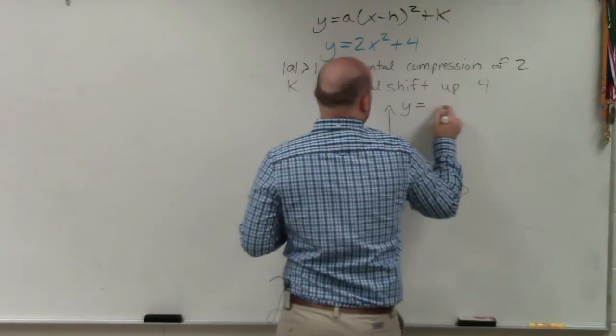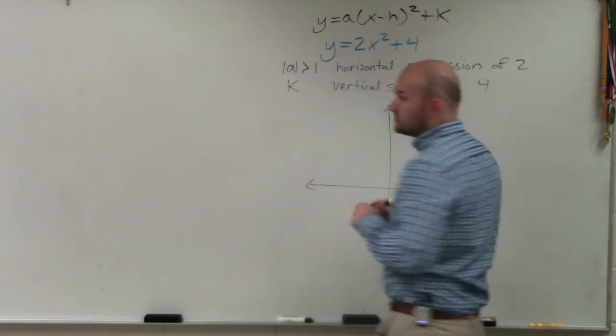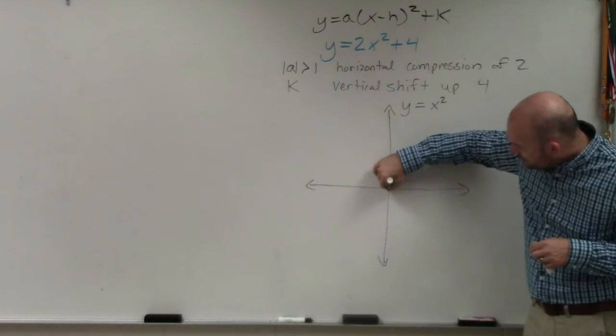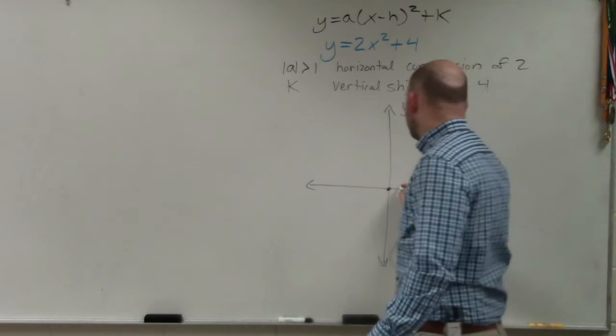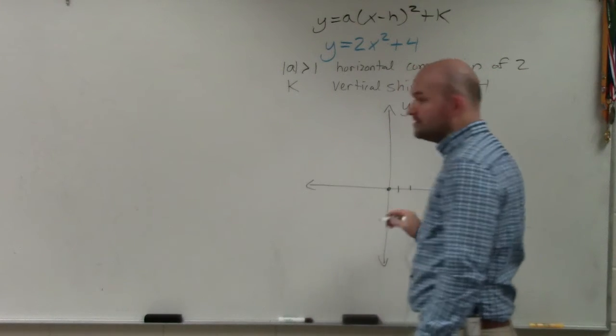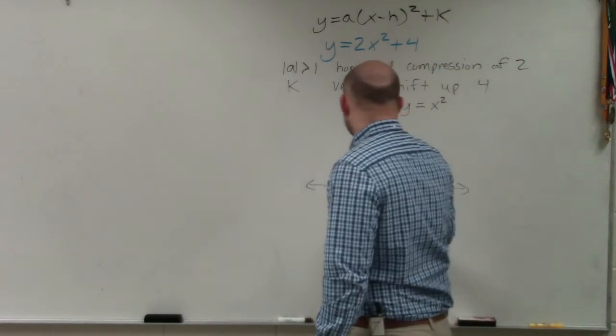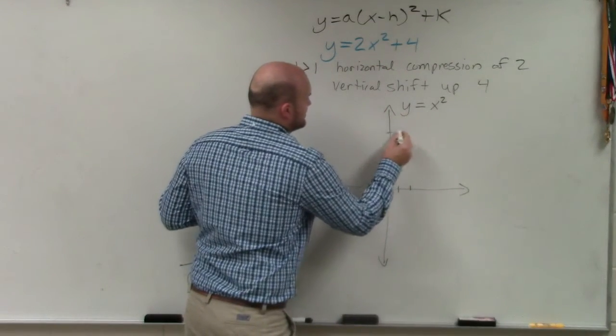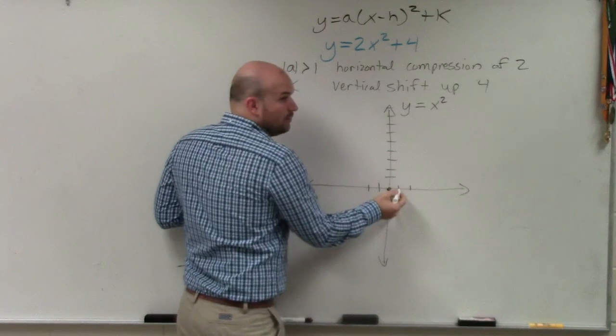The parent graph looks like this: y equals x squared. And what we talked about when y equals x squared, we have a vertex at (0,0). If you were to make a table of values for positive 1 and positive 2, negative 1 and negative 2, if you plug in 1, 1 squared is 1.